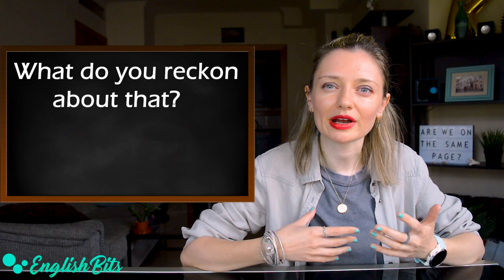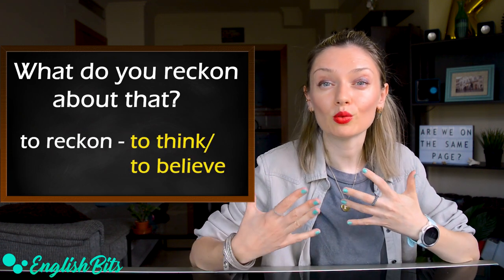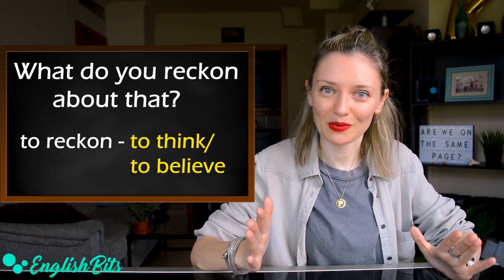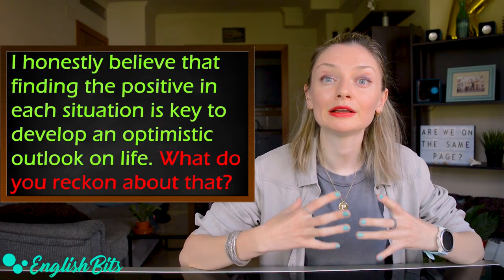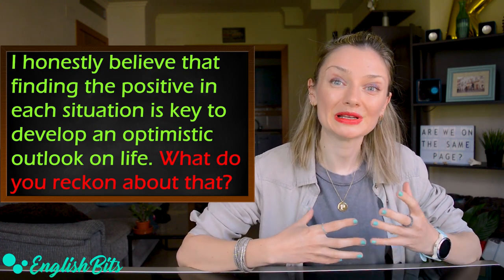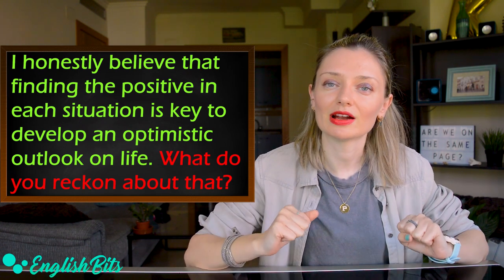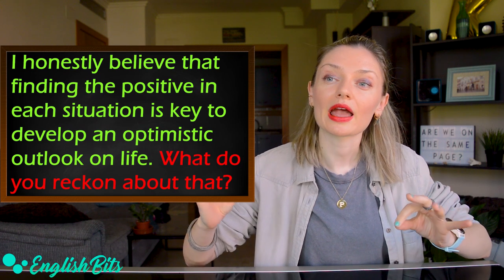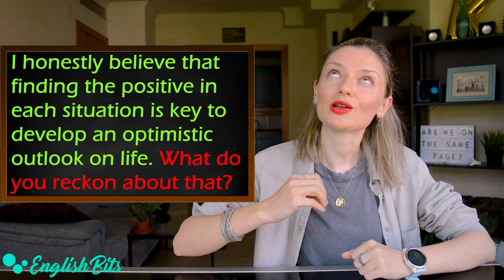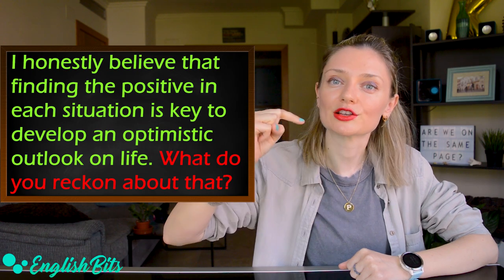Number four: 'What do you reckon about that?' The verb 'to reckon' is a more informal way to say 'to think' or 'believe.' Example: 'I honestly believe that finding the positive in each situation is key to developing an optimistic outlook on life. What do you reckon about that?' I've got a lesson on 10 advanced nouns, and one of them is 'outlook.' If you haven't seen it yet, you can click on the cards at the top of the screen or find the link in the description box.